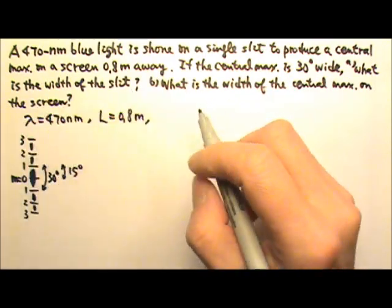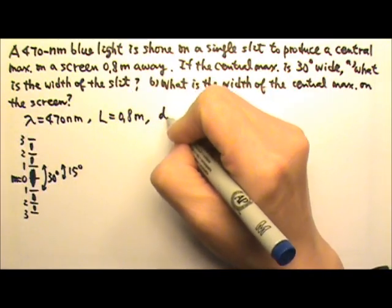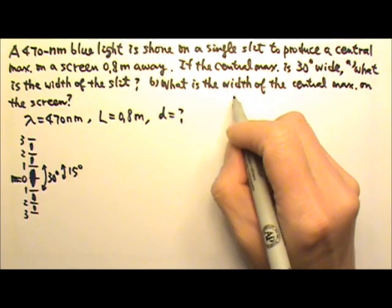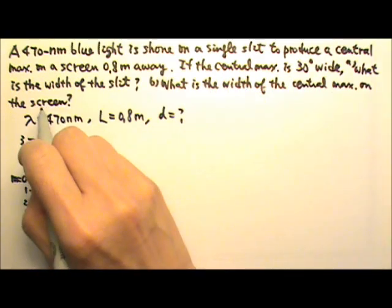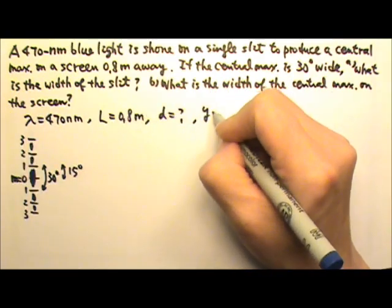And you're looking for the width of the slit, that is D we are looking for, and the width of the central maximum on the screen, that means we are looking for some sort of Y.